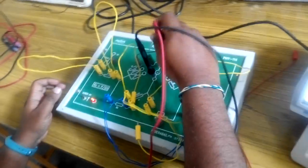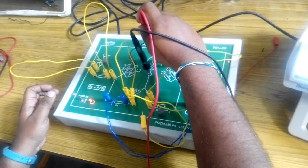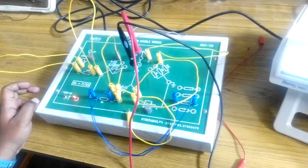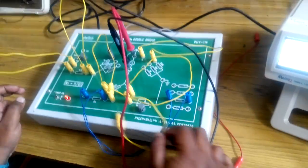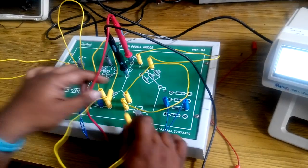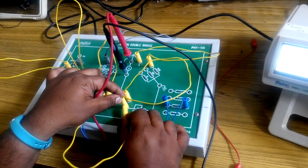The galvanometer is connected across these two points. These two points are short-circuited.